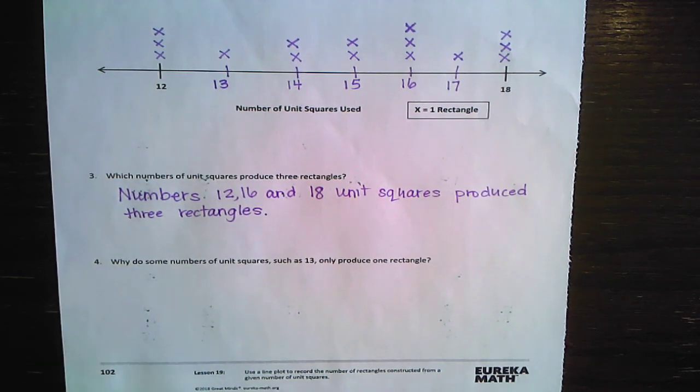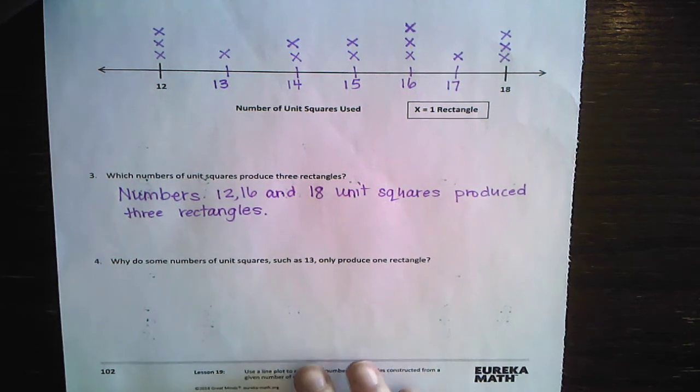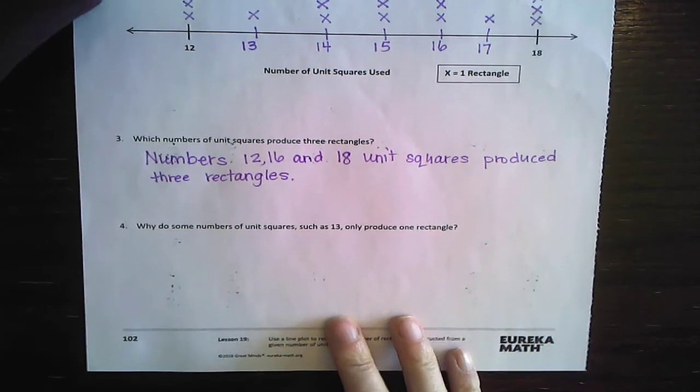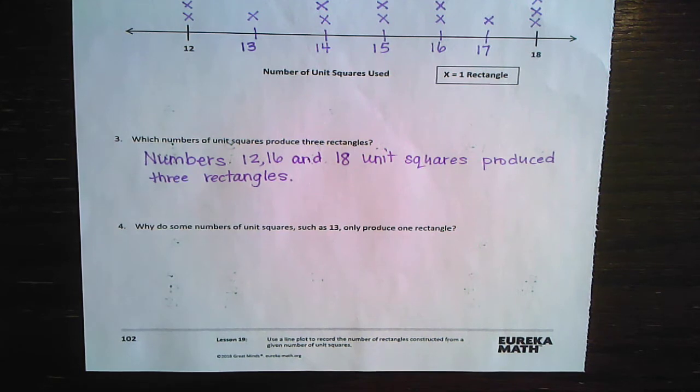And lastly, will you read it with me, please? Why do some numbers of unit squares, such as 13, only produce one rectangle? Well, I've kind of already mentioned that. But if you had to put it in your own words, what would you say? Just say it out loud. Tell your dog. Tell the birds outside. The squirrels. The butterflies, if you see any. Right. That's the only thing. That's the only factor, right? The only thing that you can multiply together to get 13 is one in 13. And that's why it only produces one rectangle.